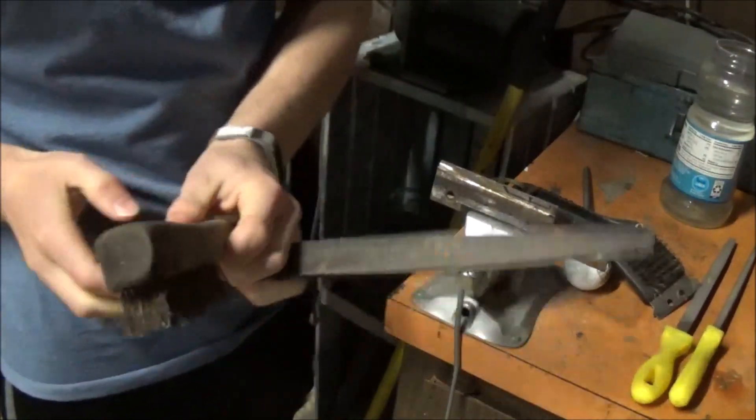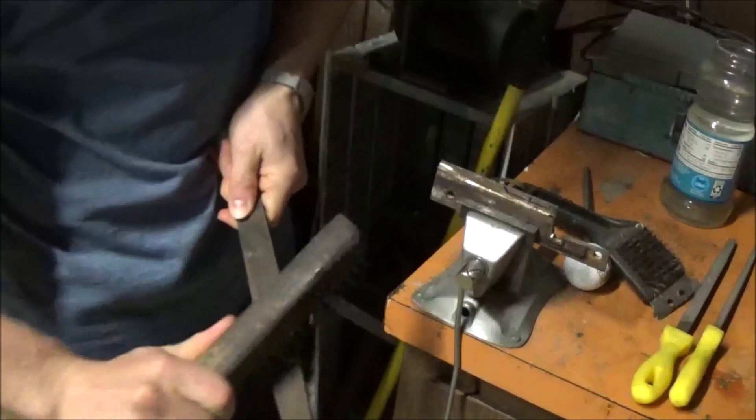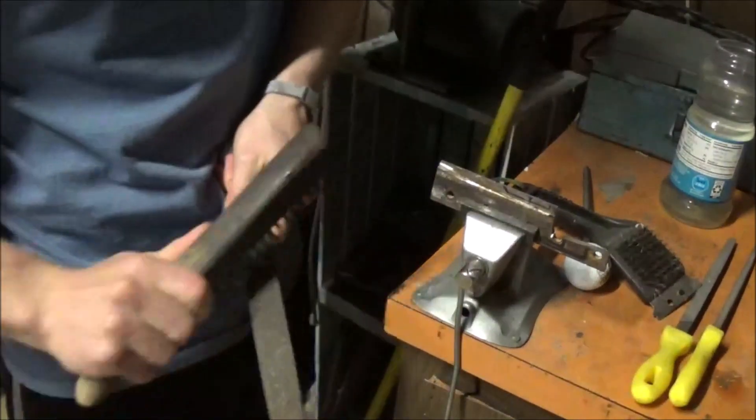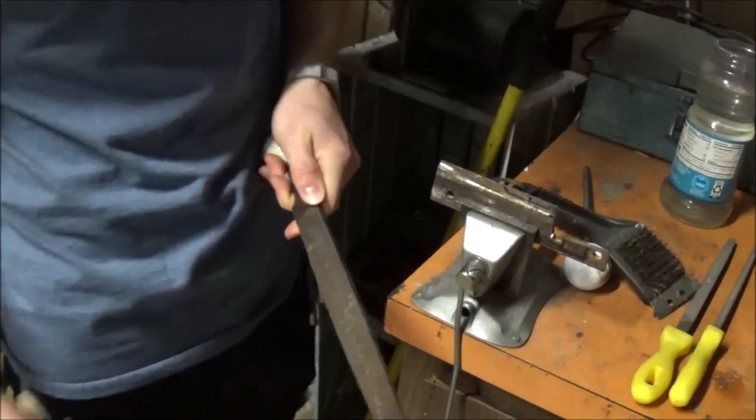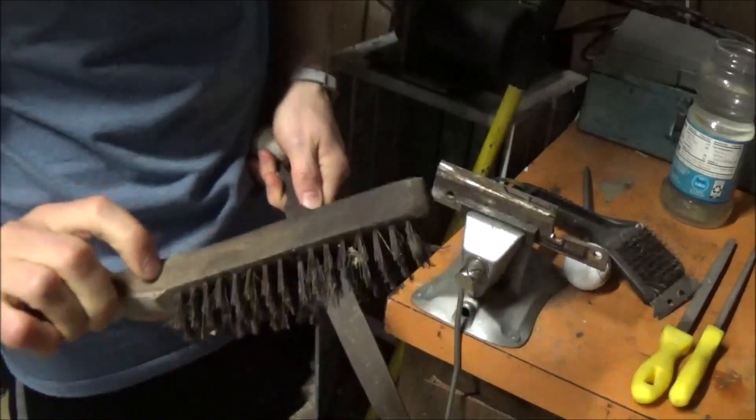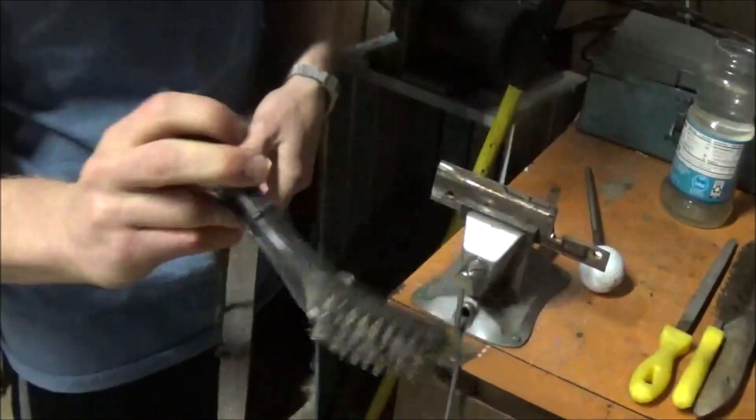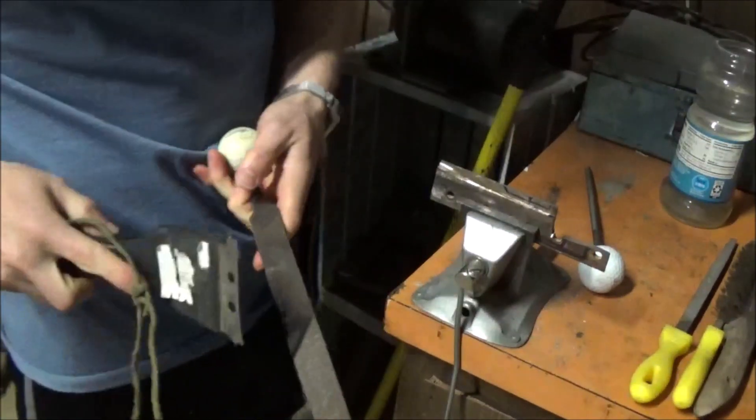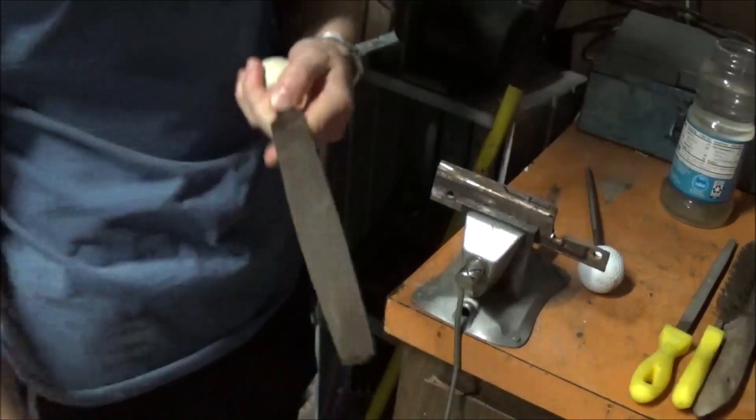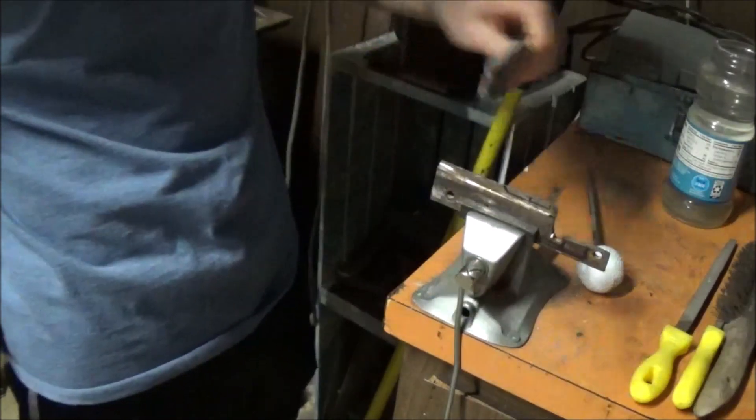Scrape the teeth out with a wire brush. And if you for some reason can't find one, you can also use a grill scraper. Works just as well, it's just a little bit less aggressive.